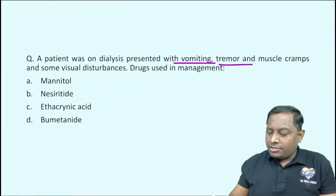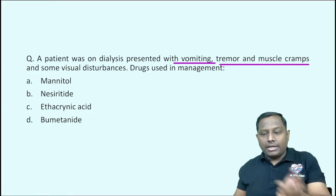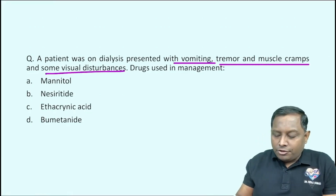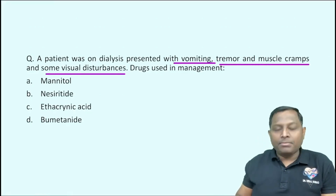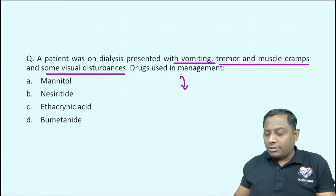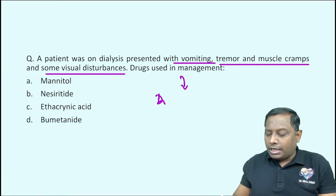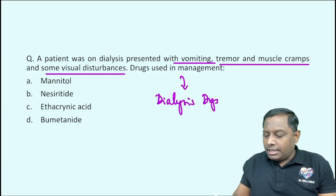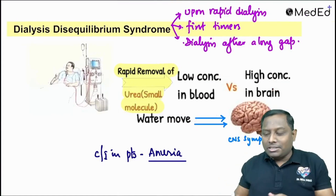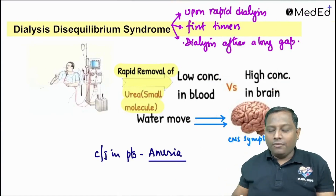A patient was on dialysis presenting with vomiting, tremor, and muscle cramps immediately after dialysis. These symptoms are coming along with visual disturbances. This question corresponds to a condition given the name dialysis disequilibrium syndrome.